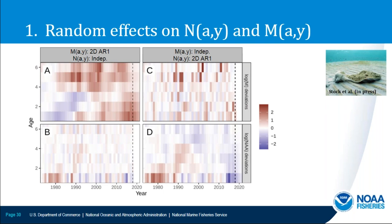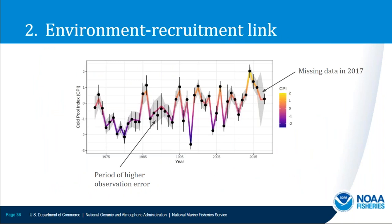Next question: do your cold pool observation variance estimates come from bootstrapping? Those were generated by physical oceanographers, so I'm not exactly sure how they derived them — I think it's related to collapsing spatial-temporal data into one yearly estimate to get the observation error estimates.